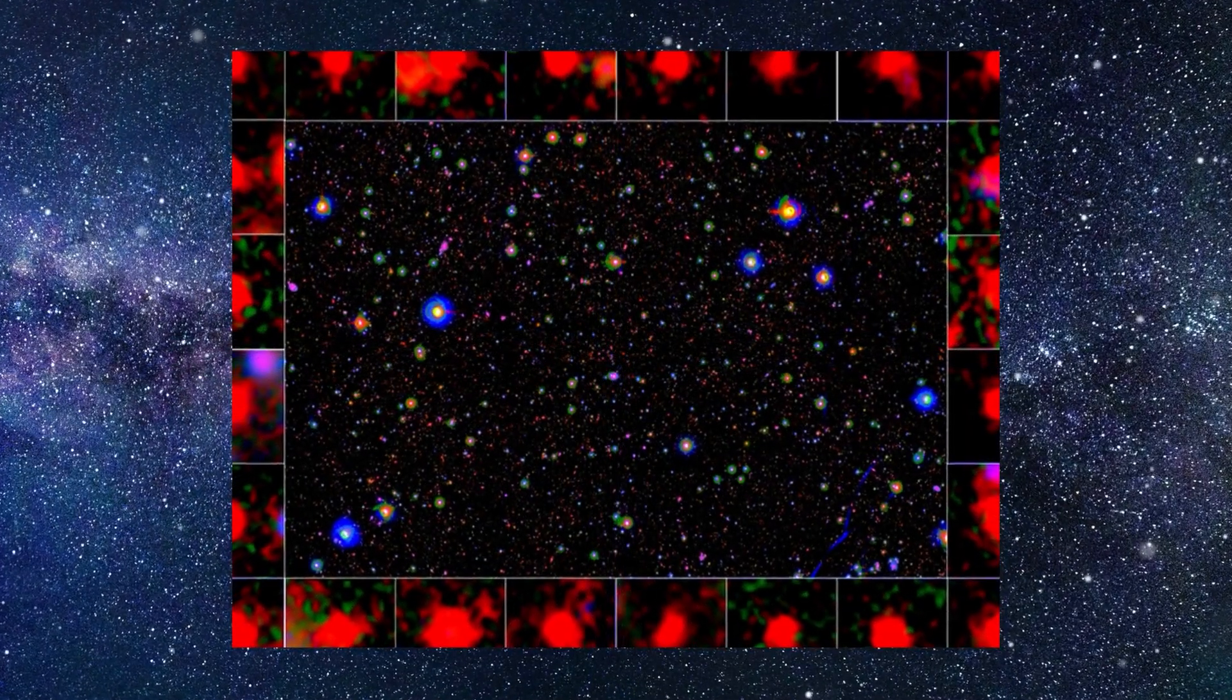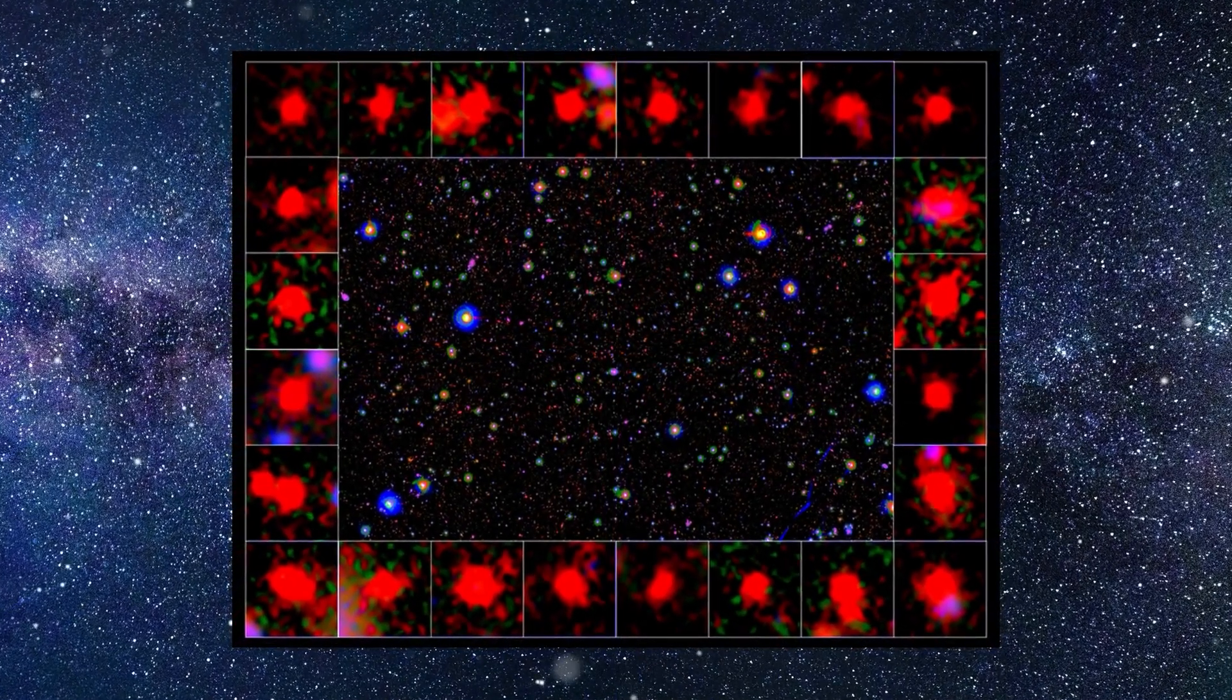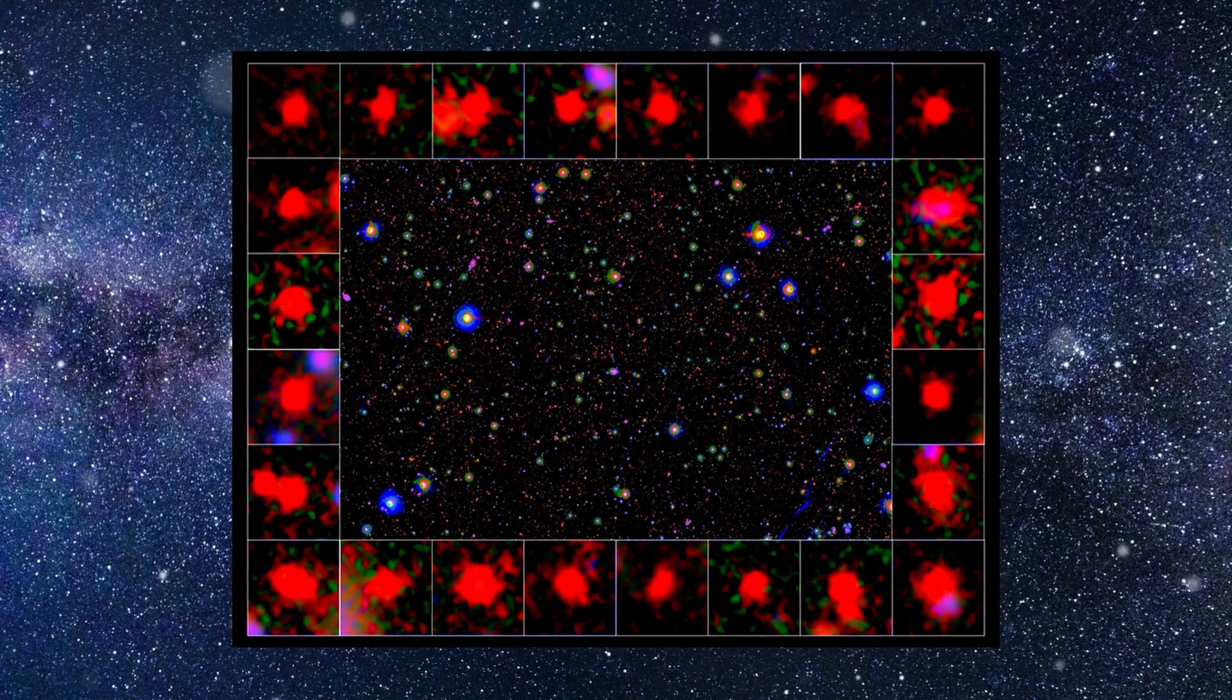As a result, the scientists blended data from different galaxies to create pictures with a greater signal-to-noise ratio of average galaxies. The scientists confirmed X-ray and radio emissions for galaxies without star formation in the average pictures.